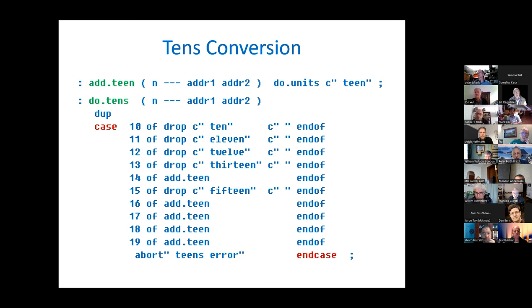With fourteen, we can just use the number four and then add teen on the end. Coming into this, the units has already been converted. We use the word add.teen which does the units, and then it brings in the string of teen. So at this point, there are two strings on the stack, the addresses of the string. There's the address of the units portion, and then the address of the teen portion. Later, these will be concatenated together. We see eighteen would be the number eight and added teen. Nine is number nine and adding teen.